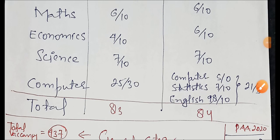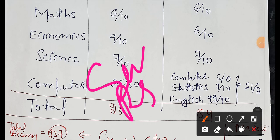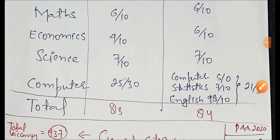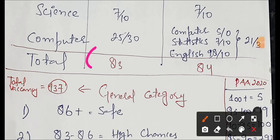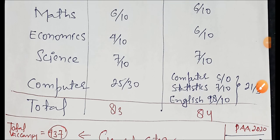For other categories like EWS, the score will remain above 82. For SC and ST categories, the score will be above 78, which you can consider as safe zone.